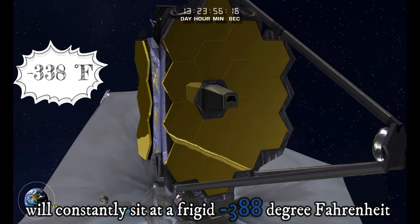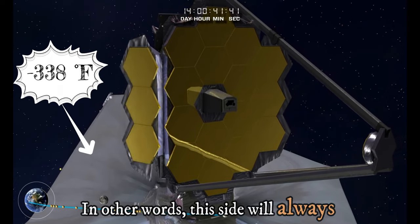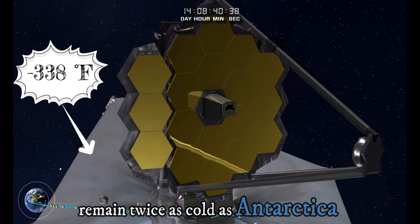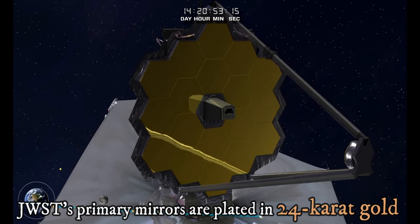In other words, this side will always remain twice as cold as Antarctica. JWST's primary mirrors are plated in 24 karat gold.